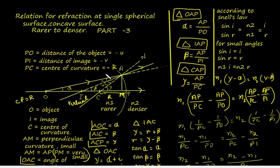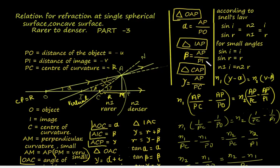From triangle OAP, taking point P instead of M, alpha equals AP by PO. Similarly, from triangle IAP, beta equals AP by PI. From triangle CAP, gamma equals AP by PC.